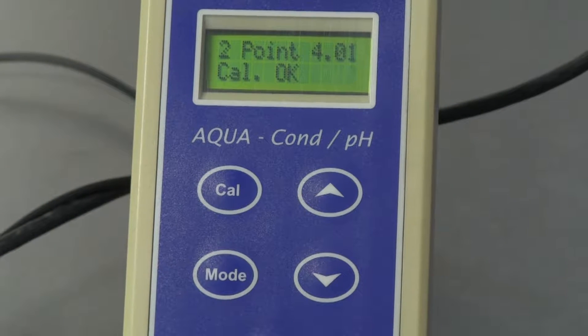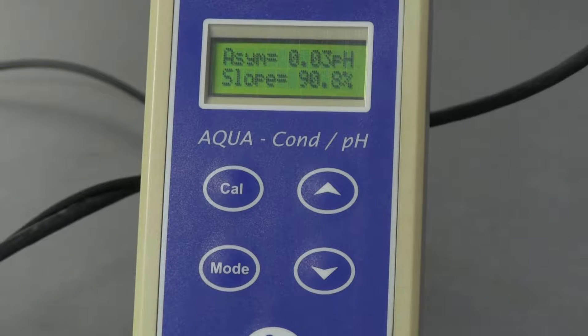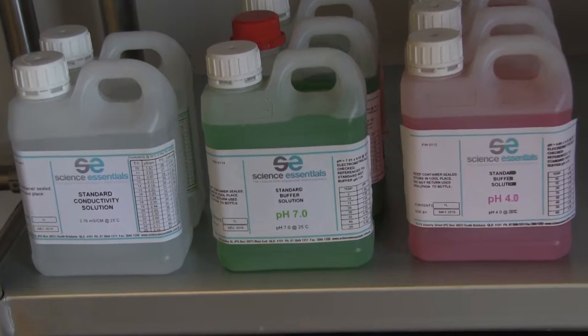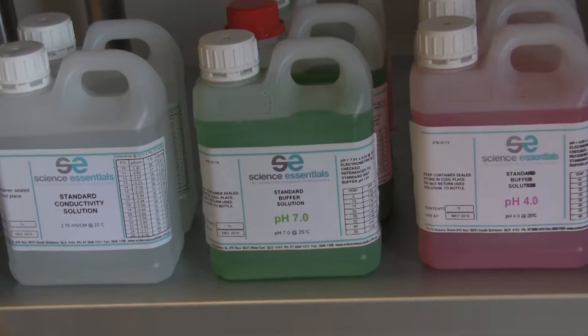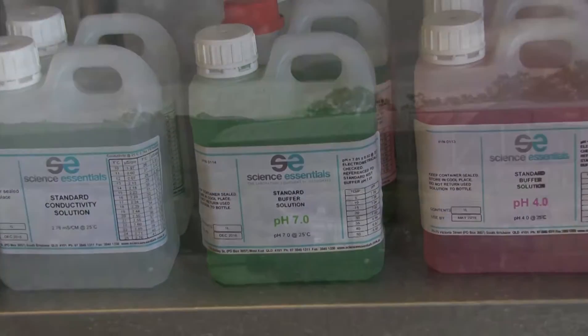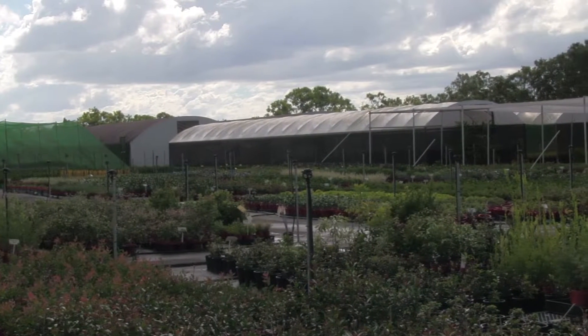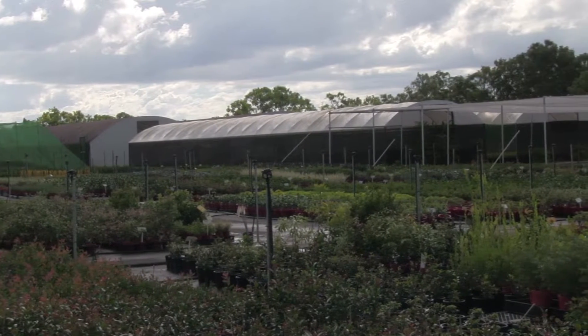Calibrating the unit against two pH buffers, known as a two-point calibration, will provide sufficient accuracy for most nursery situations. pH buffers of 4, 7, and 10 are the most common calibration buffer solutions. But for most nursery situations, a pH 4 and a pH 7 calibration will cover most commonly encountered pH readings.